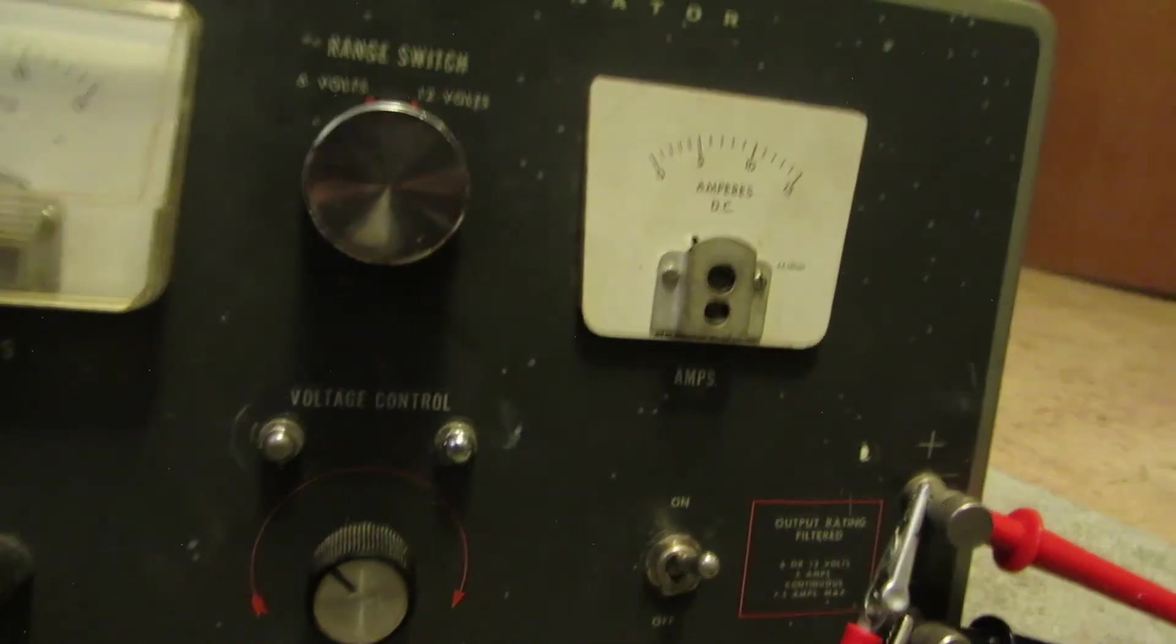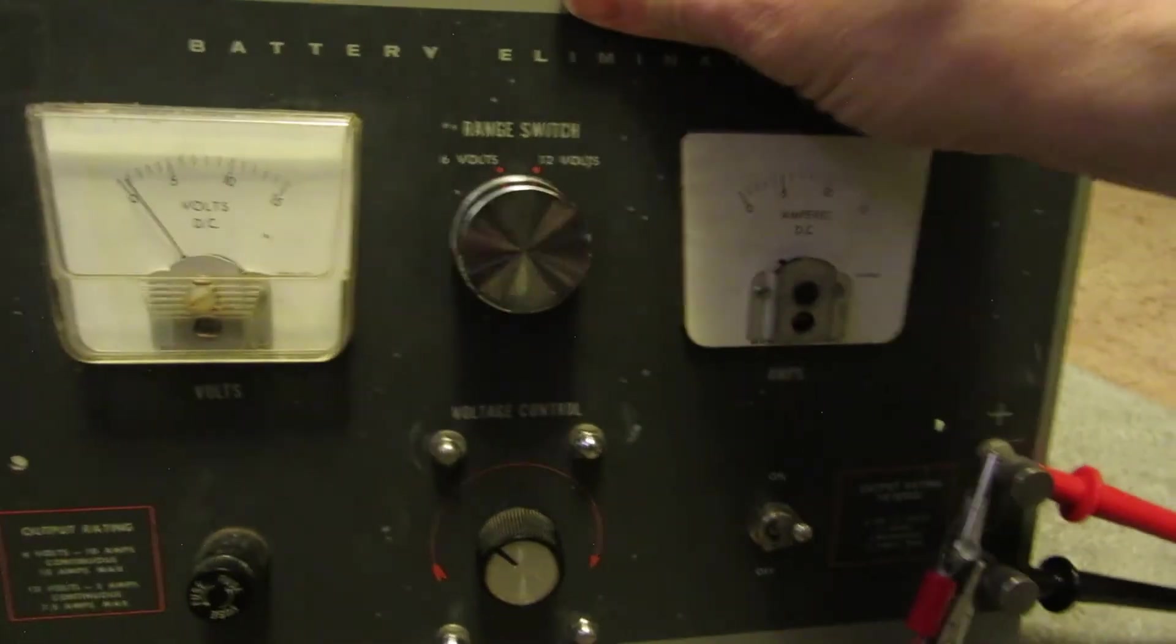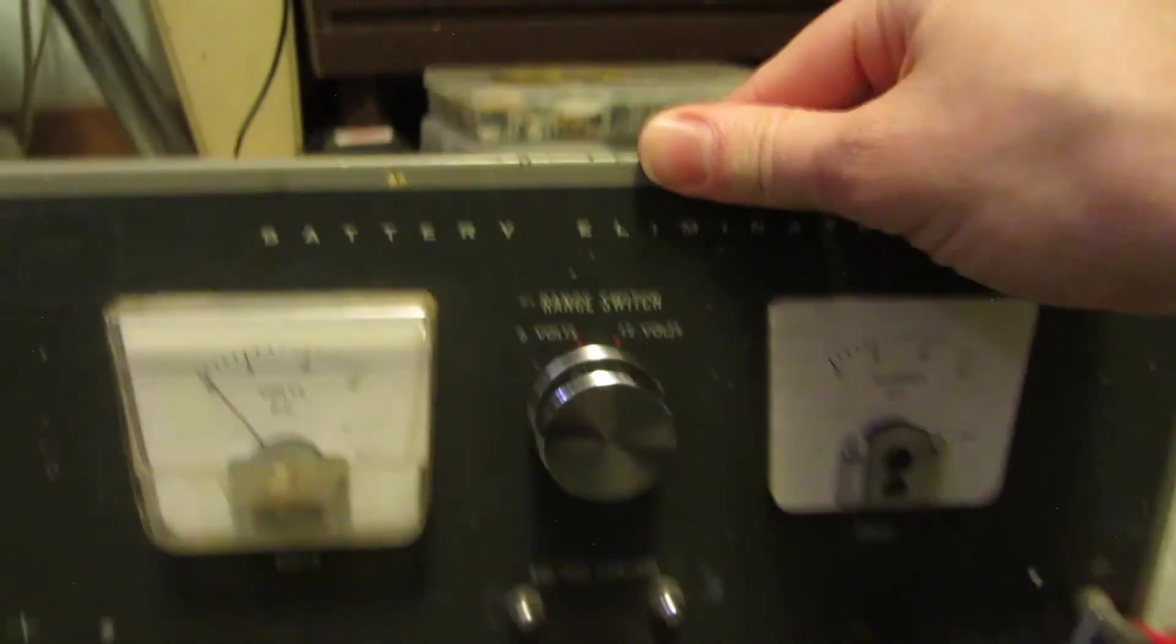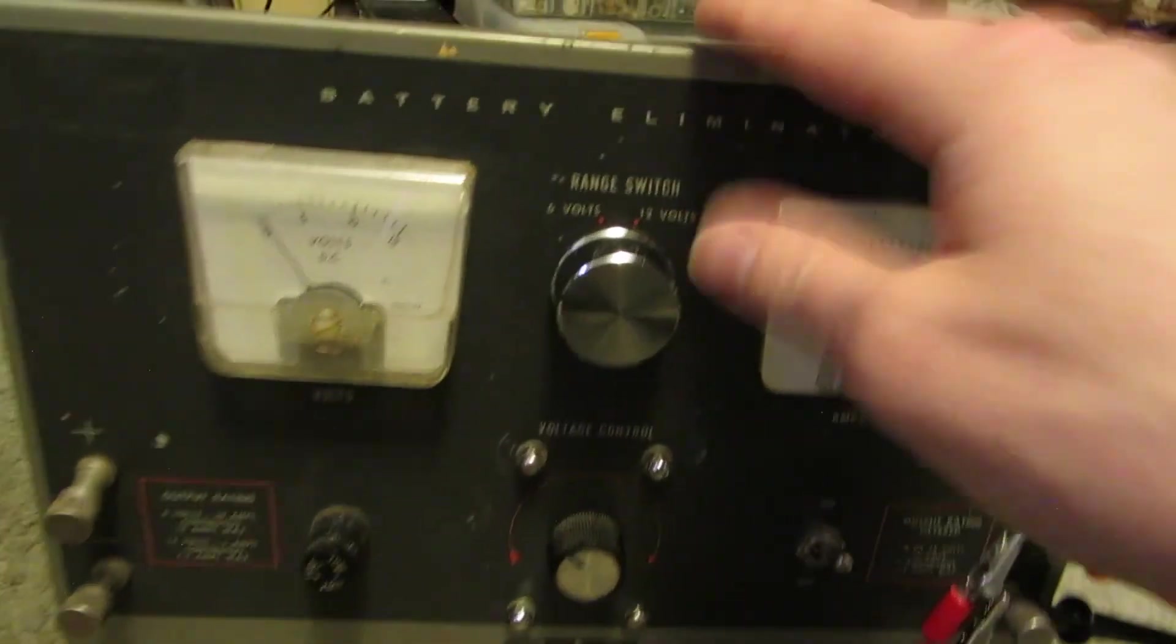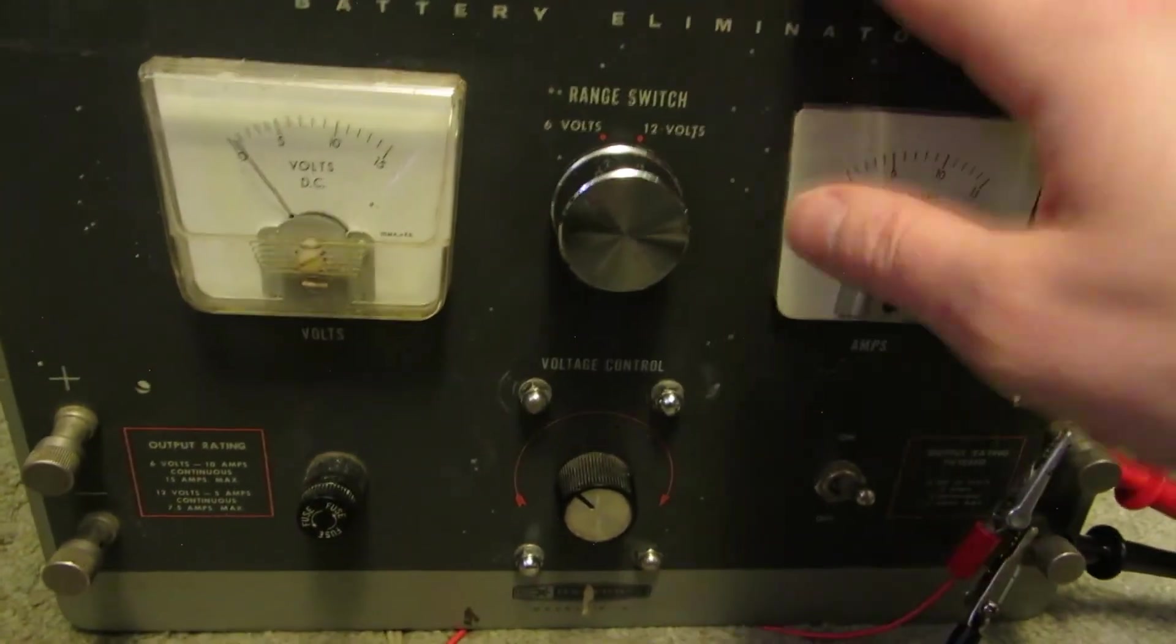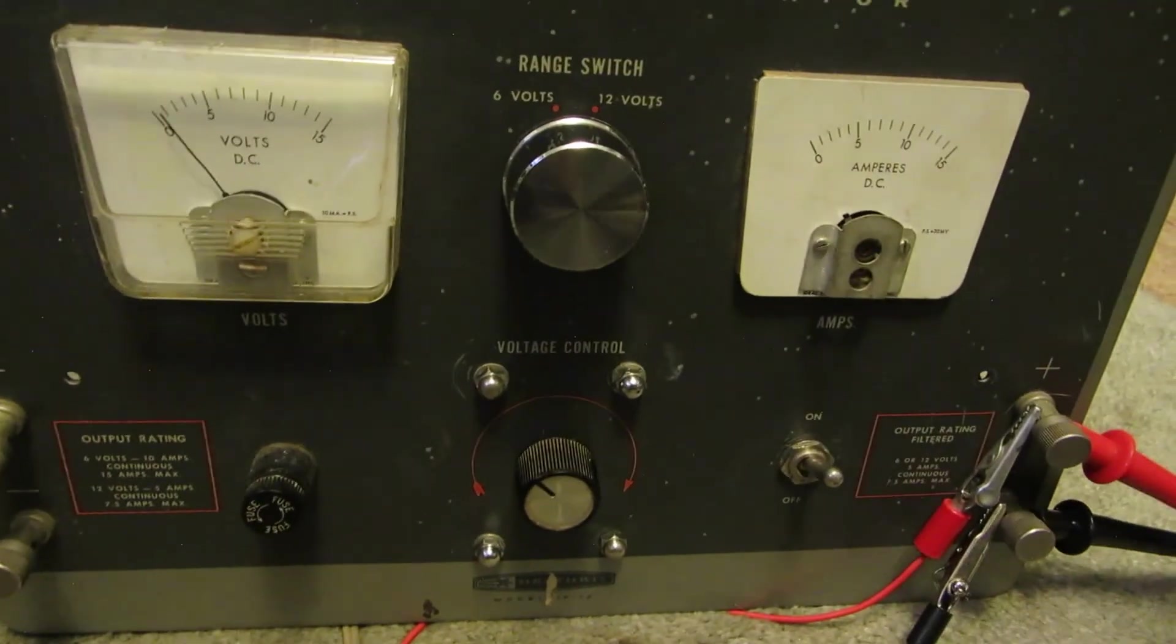So yeah. So that's the Heathkit model IP12 battery eliminator. Good piece of old technology. Reliable. Lasts for years to come. Thanks for watching everyone.